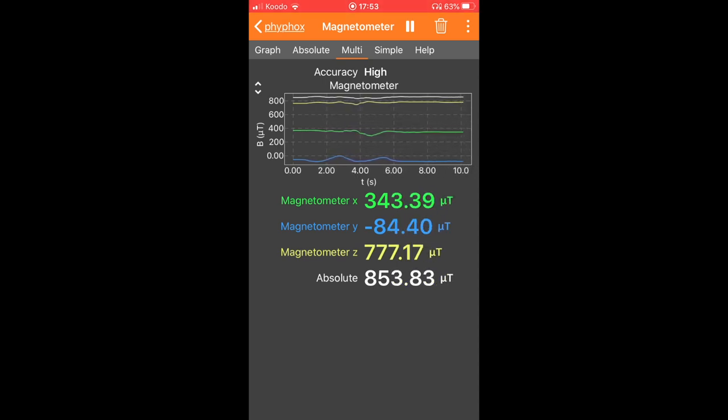You'll notice that the colors in the measurements, the numbers, correspond to the colors seen in the graph. What we're going to do is adjust our phone until the magnetic field readings are steady, and then stop collecting data, and then use the three-dot menu in the upper right to share the data with your computer.